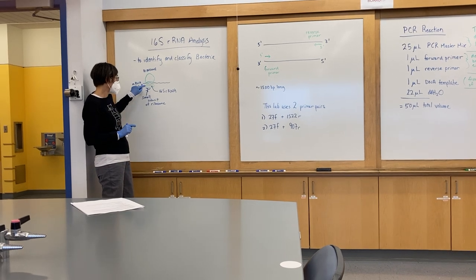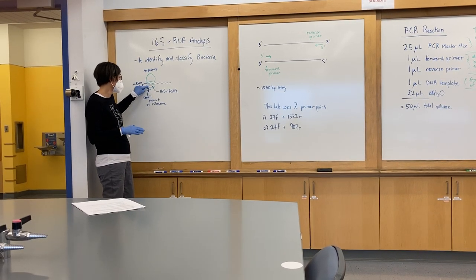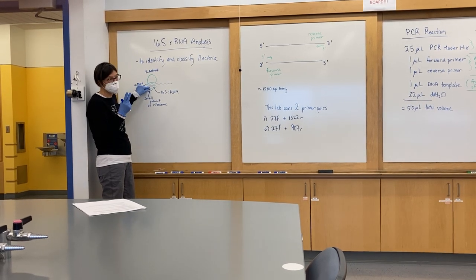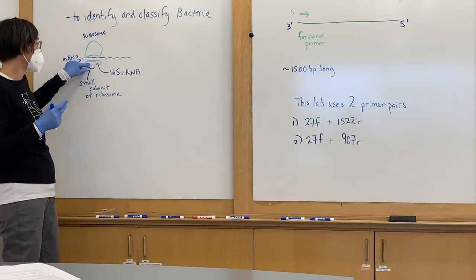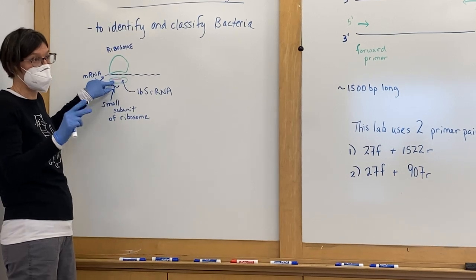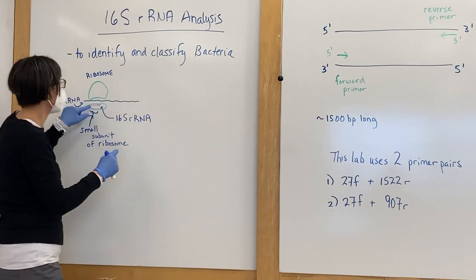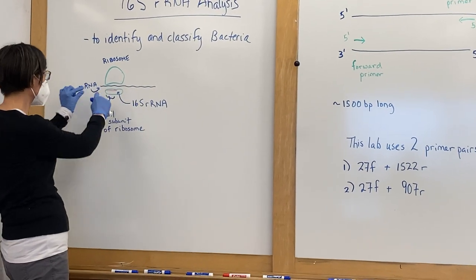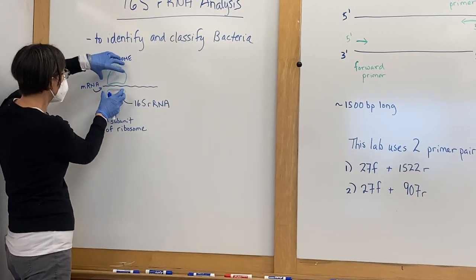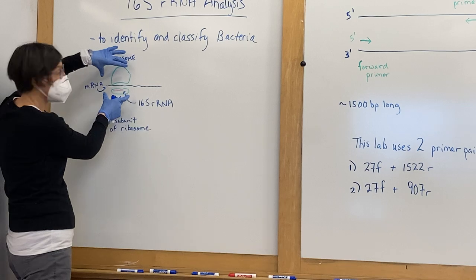Now I want to zoom in on this small subunit and remember, or state, that what makes up a ribosome are two things. They're built out of protein and ribosomal RNA. So when you look at this picture, you're looking at messenger RNA that carries information, but you're also looking at rRNA mixed together with protein to make these structures.